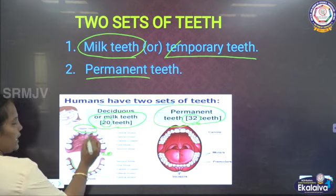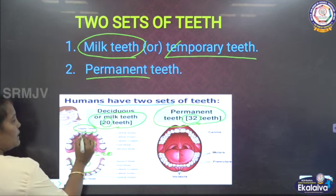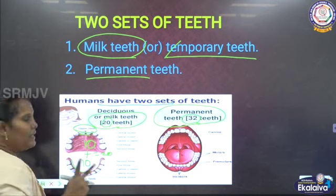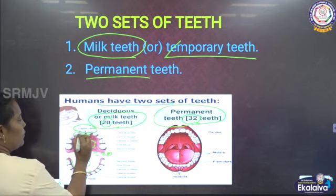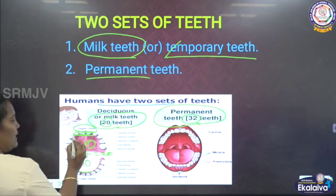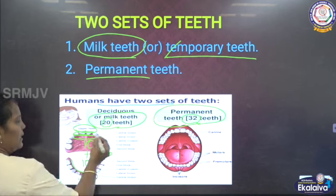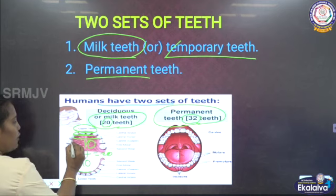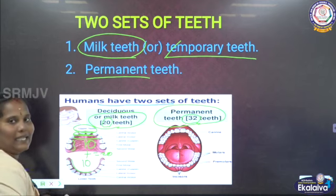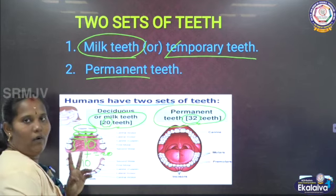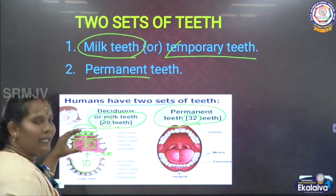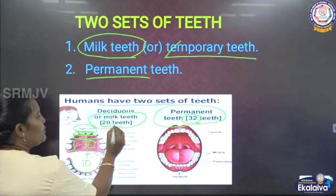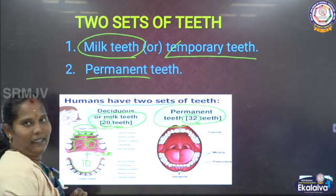In the milk teeth, first there are 4 incisor teeth. Then there are canine teeth - canine means tearing teeth. Then there are the molar, premolar, and secondary molar, one on each side. So the upper jaw has 10 teeth and the lower jaw has 10 teeth - totally 20 teeth in the milk teeth.